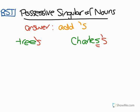Another example: 'mess.' If you want to say 'the mess's smell,' you have to add apostrophe-s, regardless of the fact that it ends in an S.